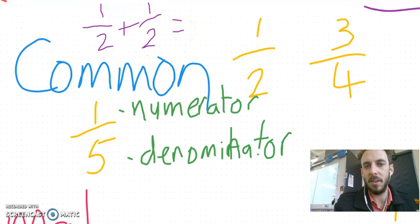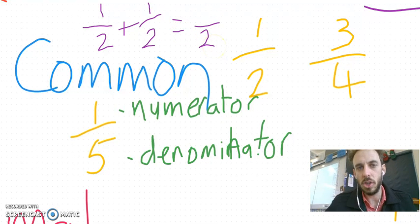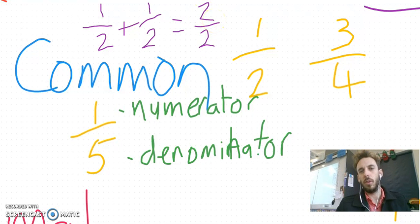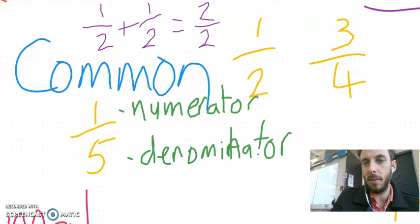In a fraction, the denominator stays exactly the same. You don't add those numbers on the bottom, you just add the numbers on the top. So I'm basically just doing one plus one, which is equal to two.